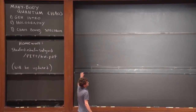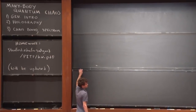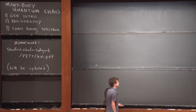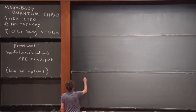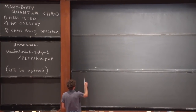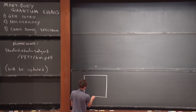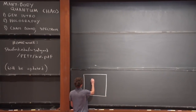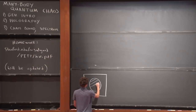I'm going to start by saying a couple of things about classical chaos. A good example to have in mind is Sinai billiards, where you have a particle moving around inside a box with a disk as an obstacle.